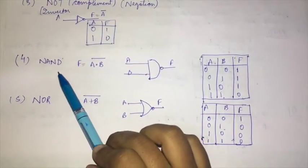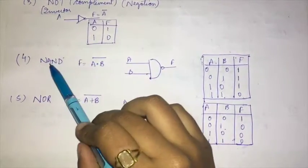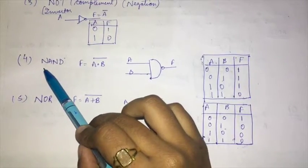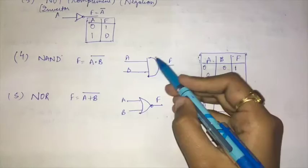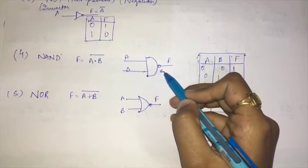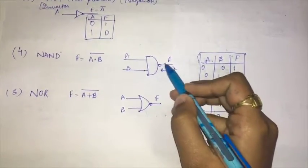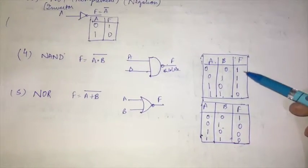The NAND gate is the AND gate plus an inverter or complement. The complement is denoted by this bubble, and its output will be the opposite of the AND gate. This is the corresponding truth table.